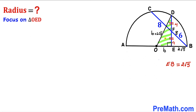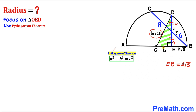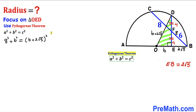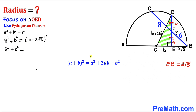Let's focus on right triangle OED and apply the Pythagorean theorem. The longest side is OD, our side c; the other sides are b (which is OE) and 8. Filling in: 8 squared plus b squared equals (b plus 2√5) squared. That gives us 64 plus b squared equals b squared plus 4√5·b plus 20, using the identity (A+B)² = A² + 2AB + B².